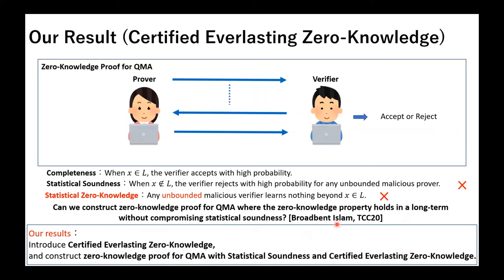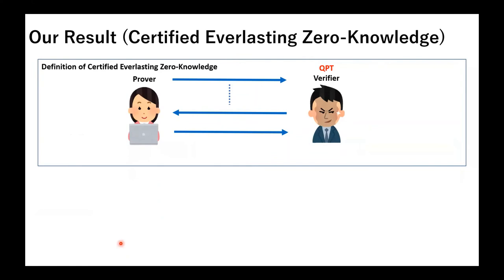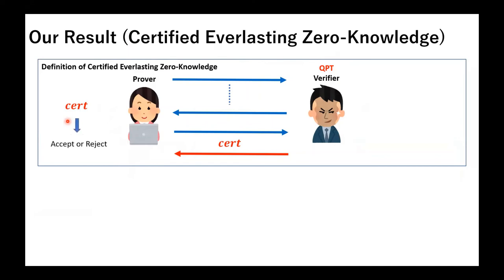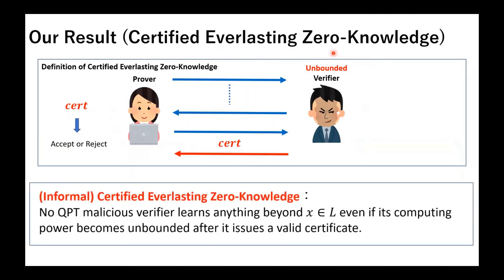Now I will explain the intuitive definition of certified everlasting zero-knowledge. In the certified everlasting zero-knowledge, the malicious verifier can issue a certificate, which shows that he deletes the information received from the prover. Then, the prover can check whether the certificate is valid or not using her internal information. When the certificate is valid, even if the verifier's computing power becomes unbounded after that, he cannot obtain information beyond the fact that the instance X is a yes instance.